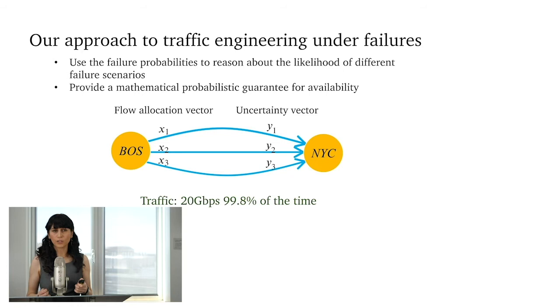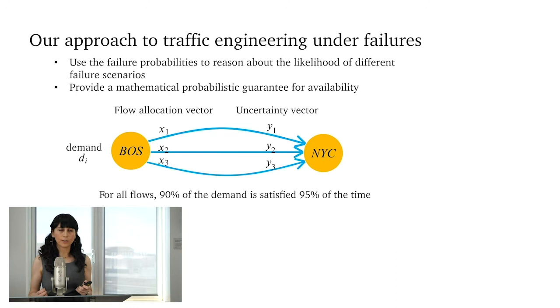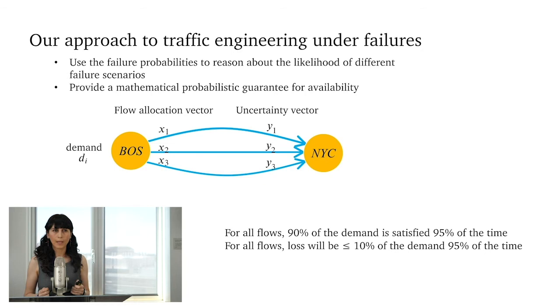And so we would like to make a statement like this. For all the flows in this network, 90% of the demand is satisfied most of the time, say 95% of the time. I'm just going to flip this. For all of the flows, loss will be less than 10% of the demand most of the time, 95% of the time. And so the key idea in our approach is the following.